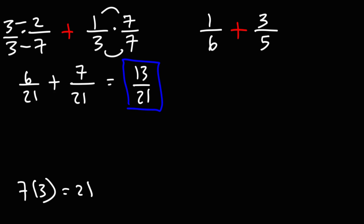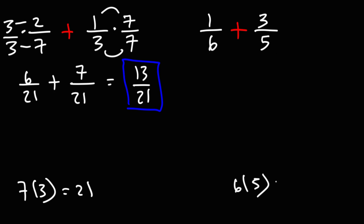Now let's move on to the next example. If we multiply the two denominators, 6 times 5, that will give us a common denominator of 30. So to get common denominators, I'm going to multiply the first fraction by 5 over 5, and the second fraction using the denominator of the first, which is going to be 6 over 6.